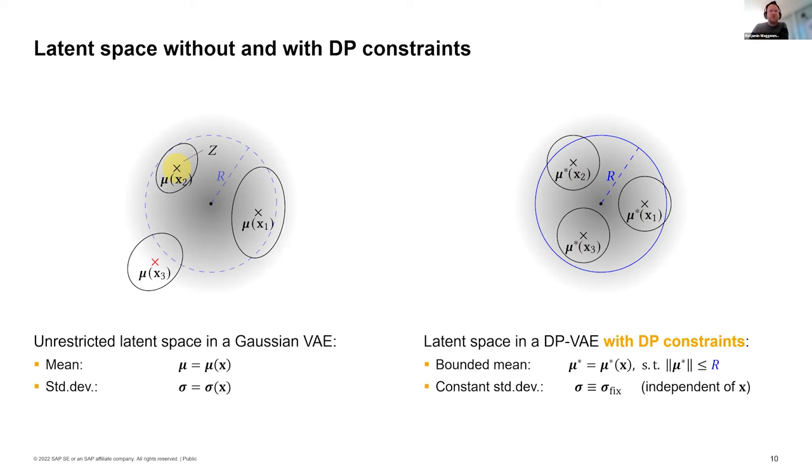The other thing is we constrain the standard deviation. All the ellipses will become perfect circles and they all have the same standard deviation. All the distributions of the encoded data where you sample your latent vectors z from, they will all have the same standard deviation. This is our architecture for differentially private inference with a variational autoencoder.